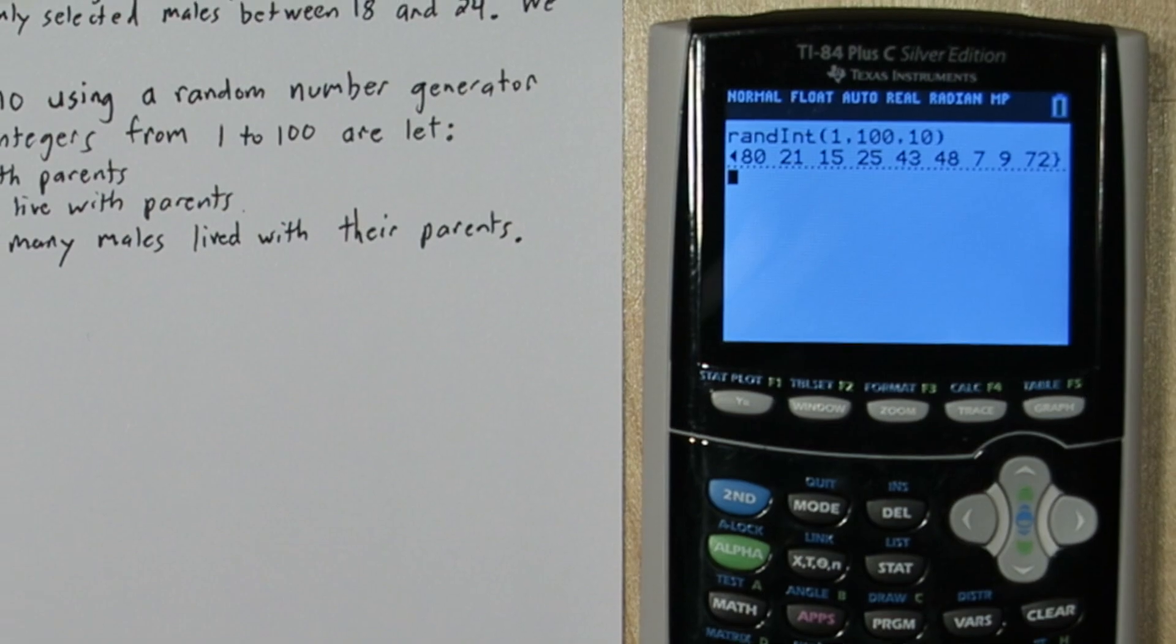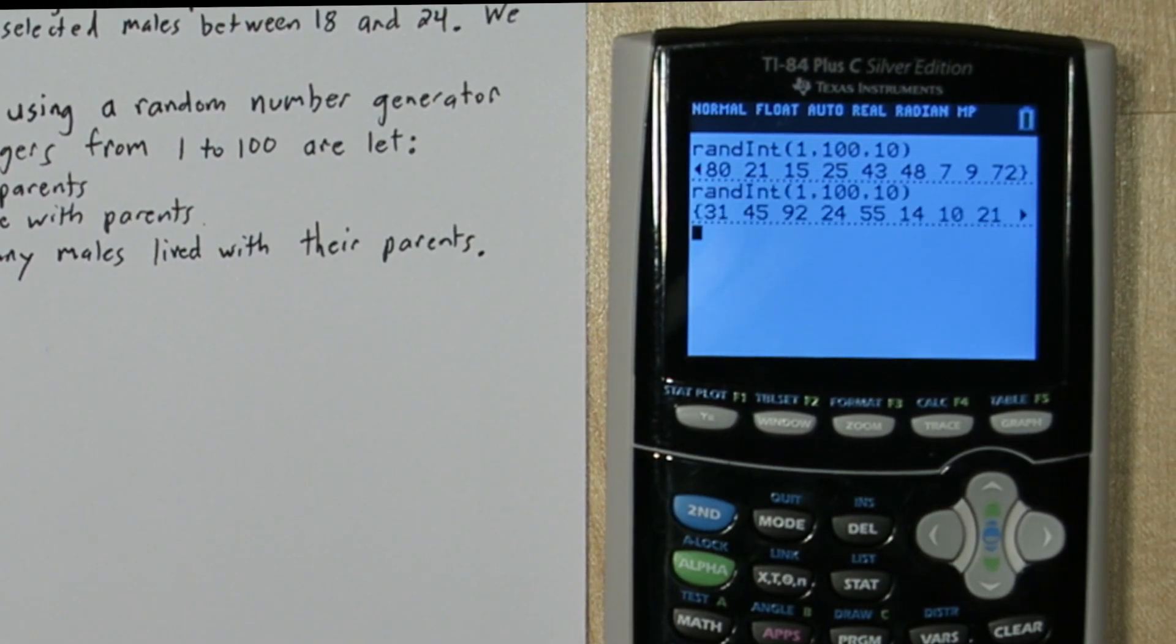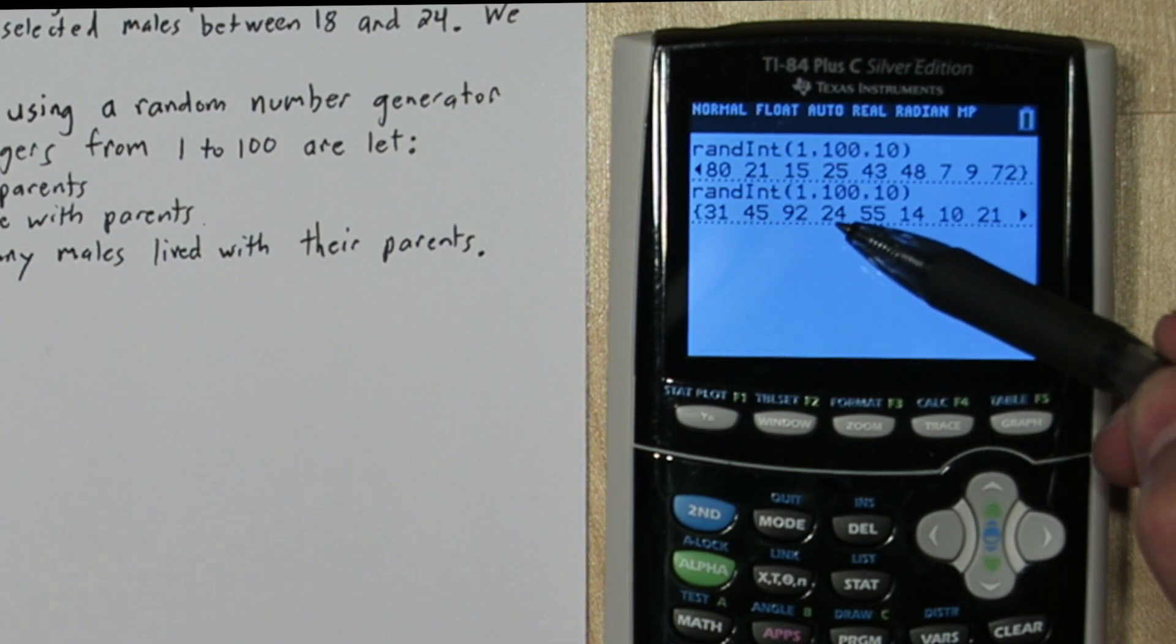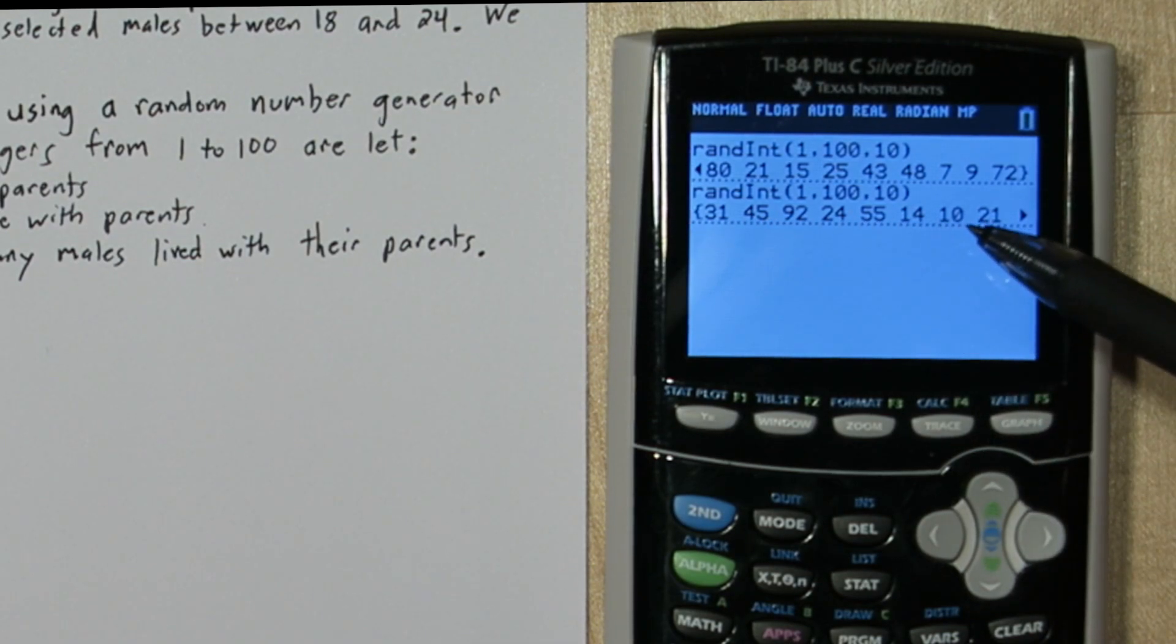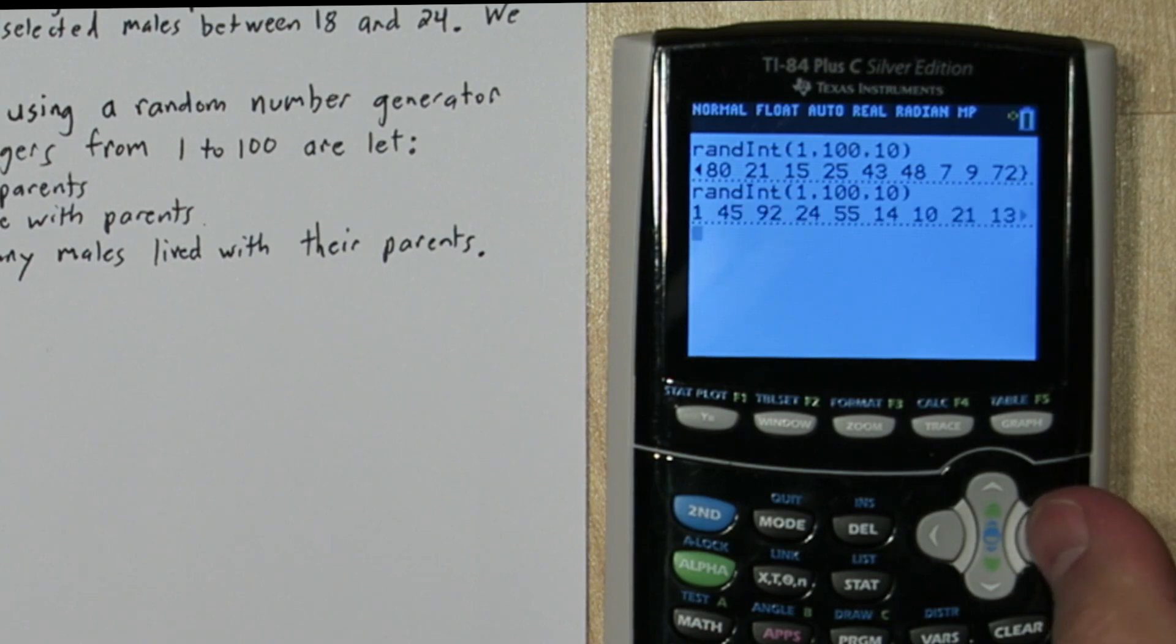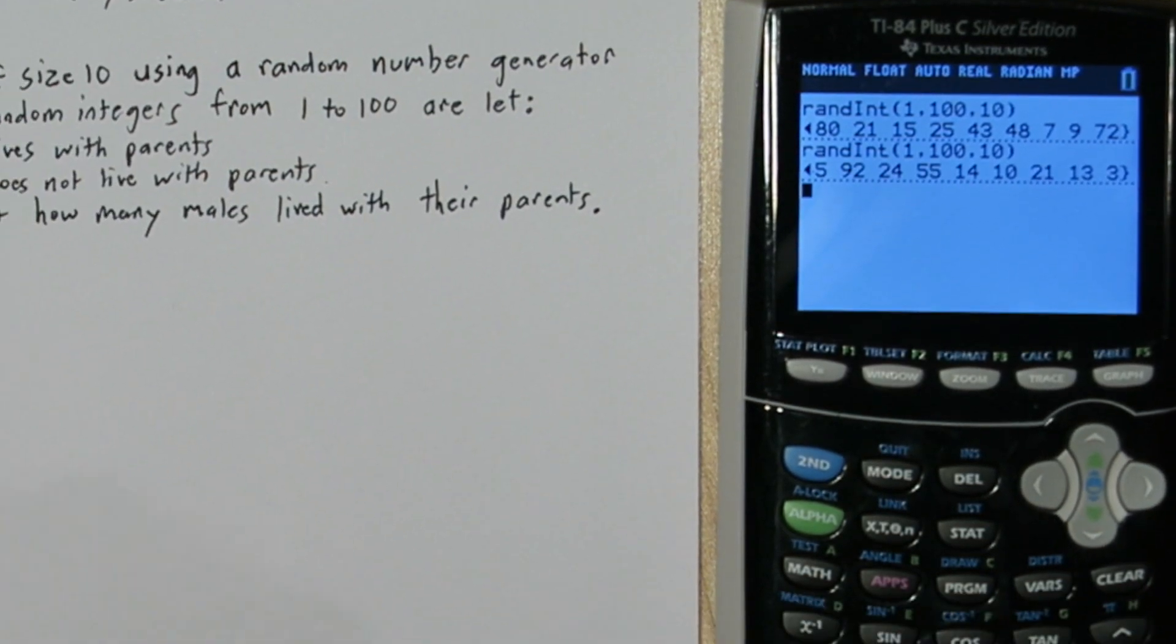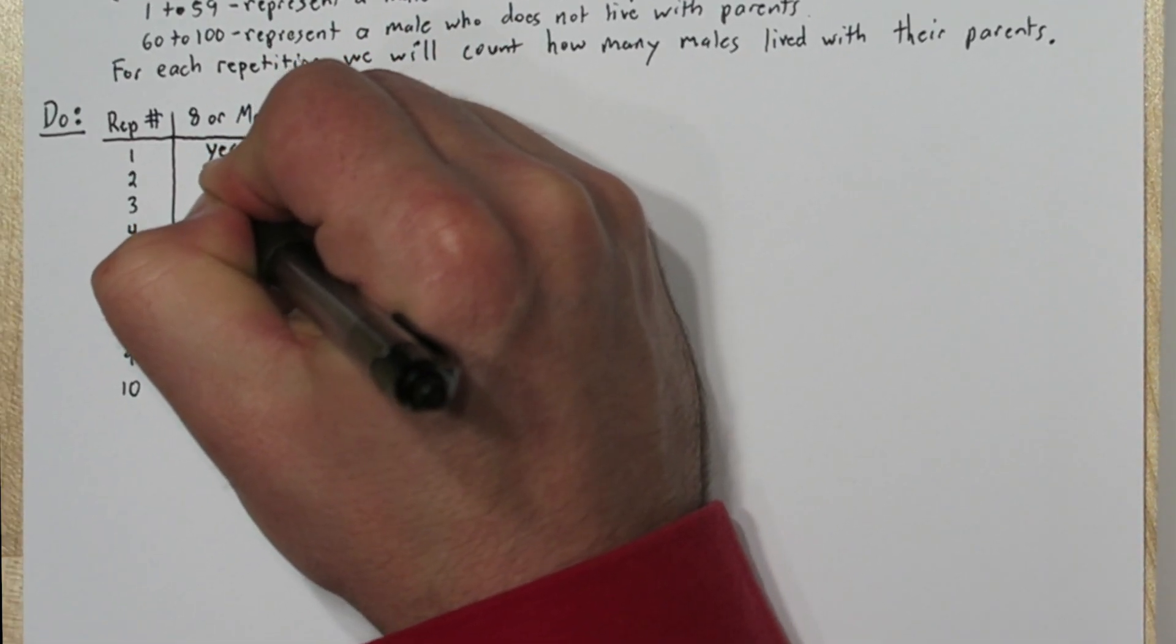Now if you just press enter on your calculator it will run the command again and you can count again. So in this sample it looks like we have 1, 2, 3, 4, 5, 6, 7, 8, 9. So in this sample we also had 8 or more.